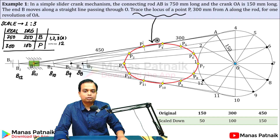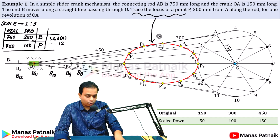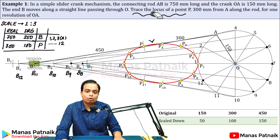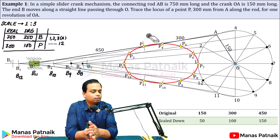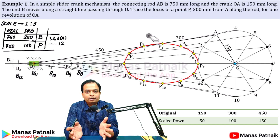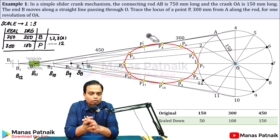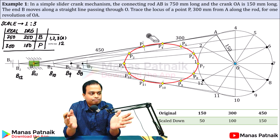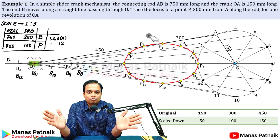When you join all of these points in proper sequence, what you have is the locus of point P. This red curve that you see is nothing but the locus of point P. I want all of you to take a screenshot right now and then go ahead and make the same drawing on a piece of paper.